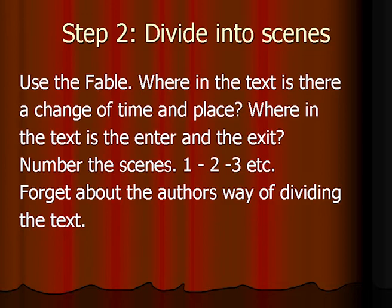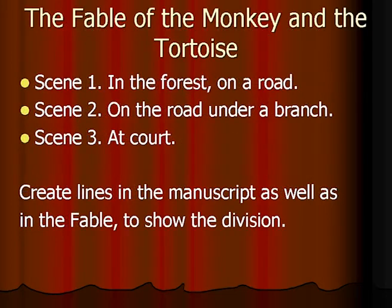Now, phase two, step two: divide into scenes. Now you are using the fable — forget about the police protocol, it has done its work. Where in the text is there a change of time and place? Where in the text is the entrance and exit of characters? You number the scenes one, two, three and so on. Forget about the author's idea about dividing the text, because that is in the script — now we are working with the fable.